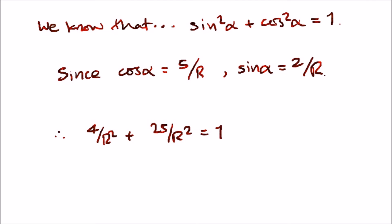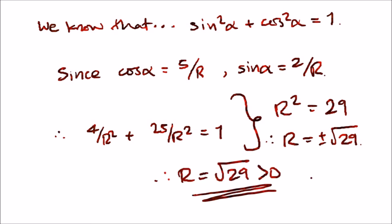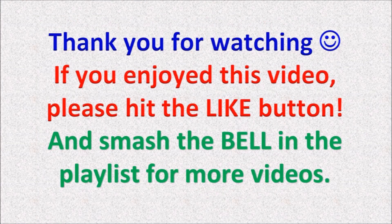Therefore r² = 29, and hence r = ±√29. If you remember from the question, r has to be positive, so the only valid answer is r = √29.